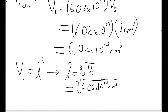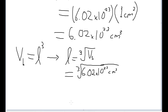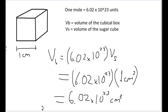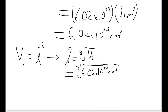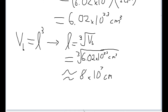Plugging this into your calculator and rounding to a single significant figure — because of how much we're approximating here — this is going to be about equal to 8 times 10 to the 7th centimeters. The answer key at the back of the book wants us to give this in kilometers, which requires a basic centimeters to meters to kilometers conversion.